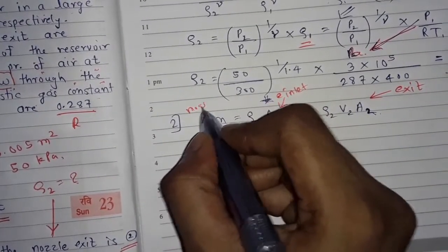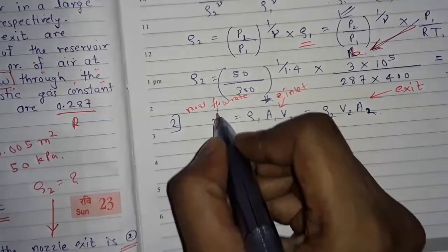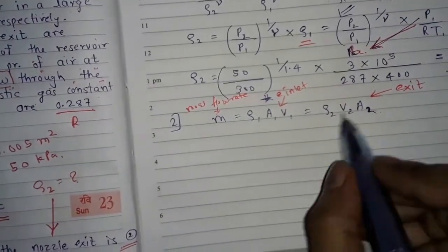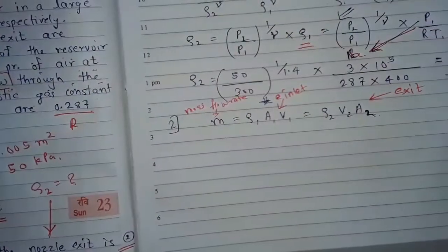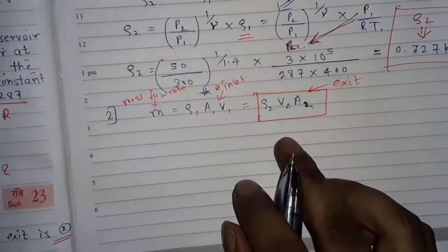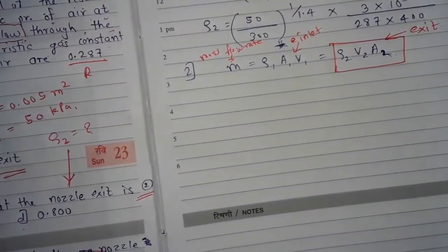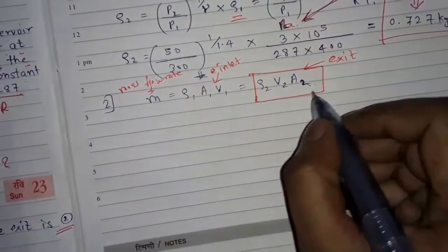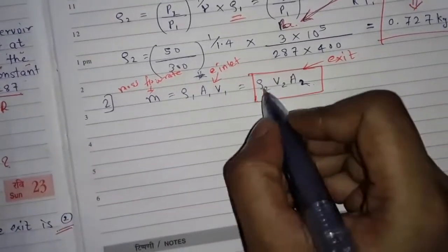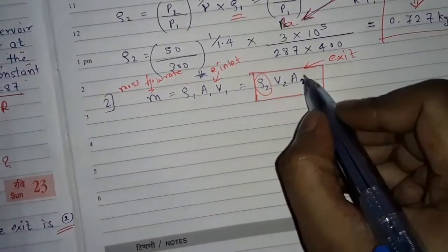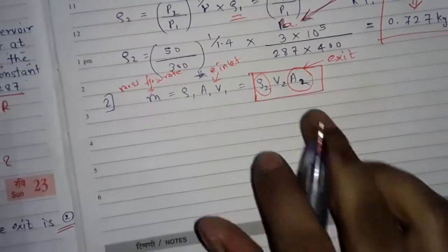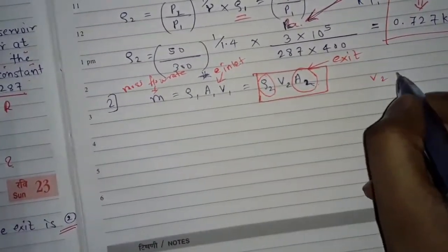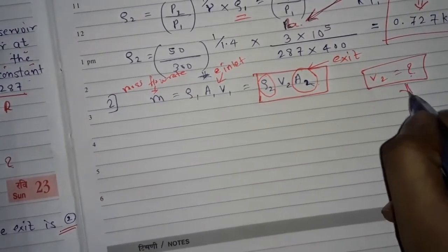This continuity equation is most useful for finding the mass flow rate through the nozzle. We already have rho2 and A2, so we only need to calculate V2, after which we can find m.